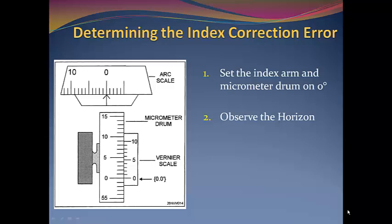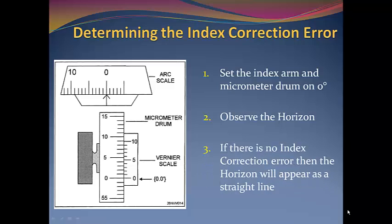If there is no index correction error, then the horizon will appear as a straight line across both the horizon view and the mirror view.